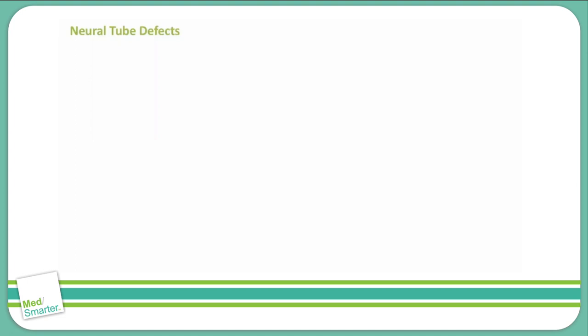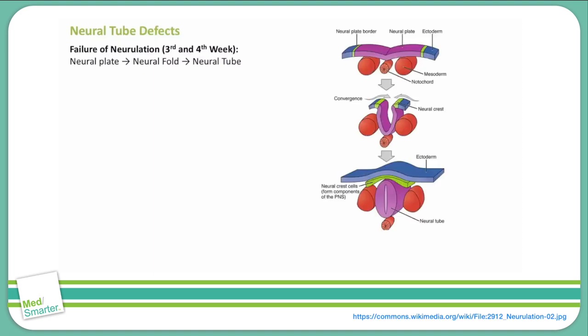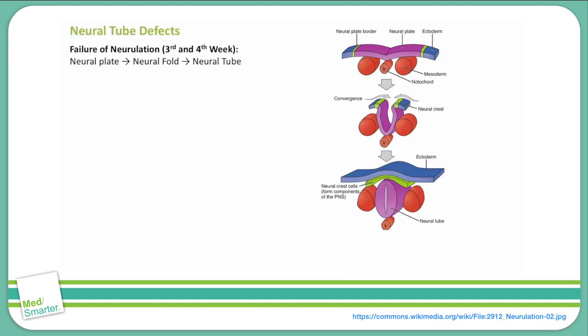The spectrum of neural tube defects exists due to a failure of a process called neurulation, which happens in the third and fourth weeks of fetal development. There are a few key steps of central nervous system development that are key to understand. The central nervous system begins forming when the notochord induces the formation of the neural plate.